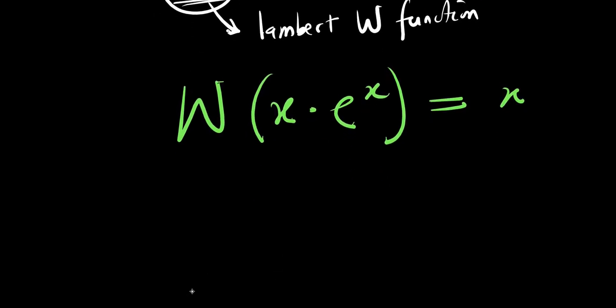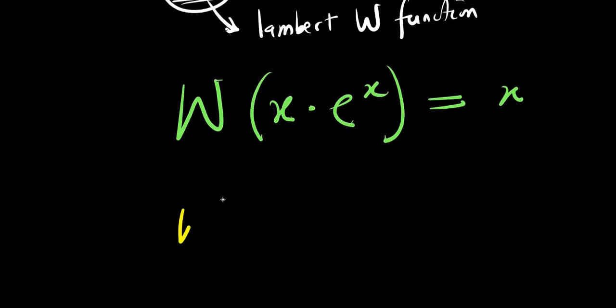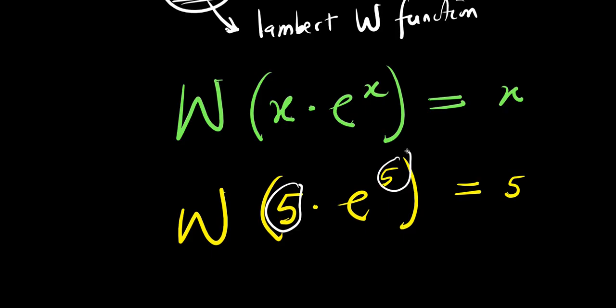You also apply it when you have numbers. You have 5 times e power 5, you have 5 as the result. So what this basically tells you is that what you have here must be exactly what you have here, and it must be e that's separate to both.